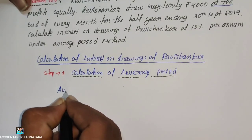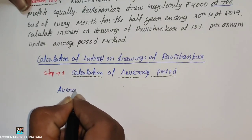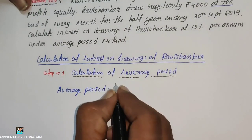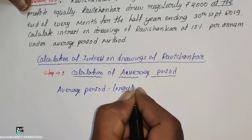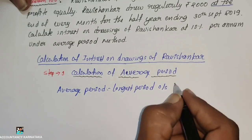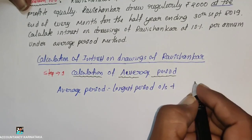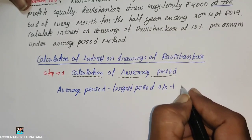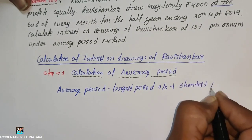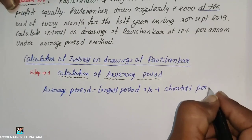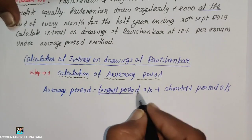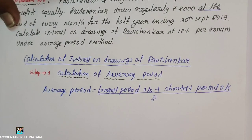The formula: average period is equal to longest period outstanding plus shortest period outstanding, divided by two.